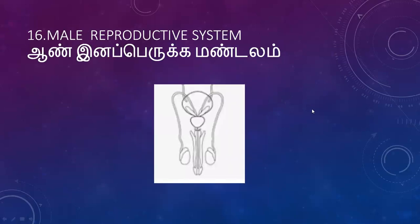Structure of the male reproductive system: epididymis, vas deferens, prostate gland, bulbourethral gland, and urethra.